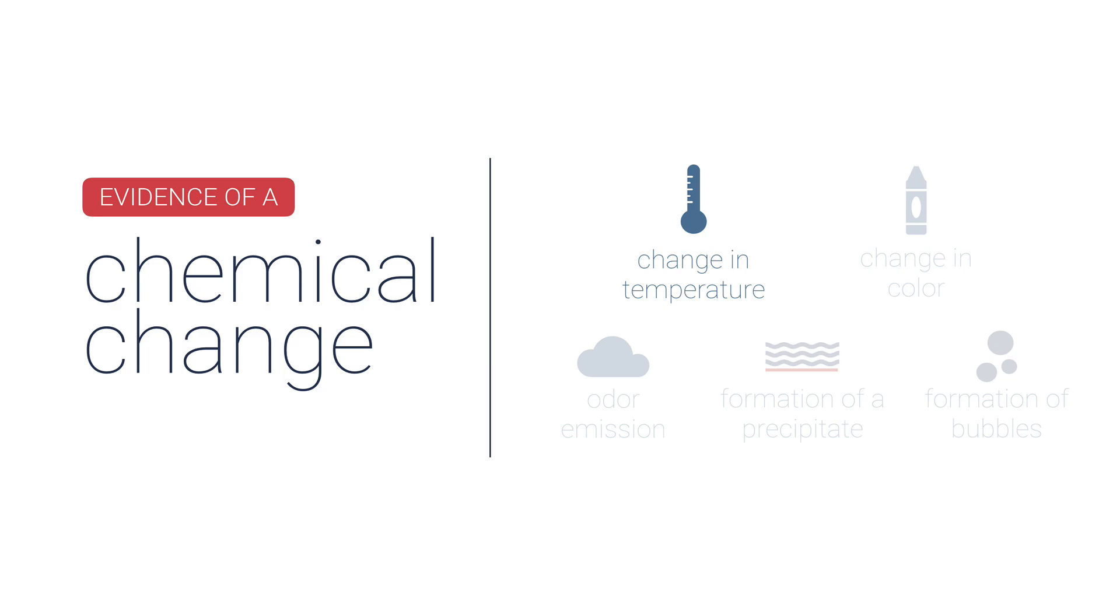A change in color is also evidence of a chemical change. So is giving off an odor, whether it's good or bad, is evidence of a chemical change. Forming a precipitate, now precipitate is just a solid that we produce from a reaction, usually it settles to the bottom of our container. If there was no solid to begin with and at the end there is a solid, we call that a precipitate and it's certainly evidence of a chemical change.